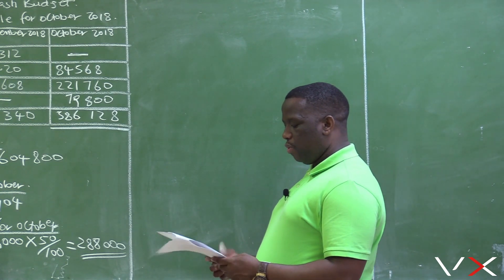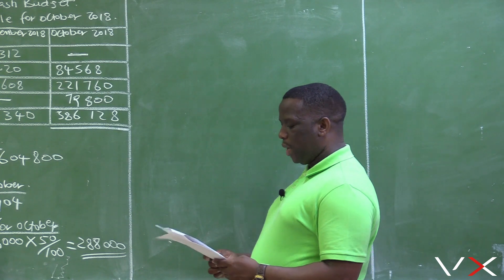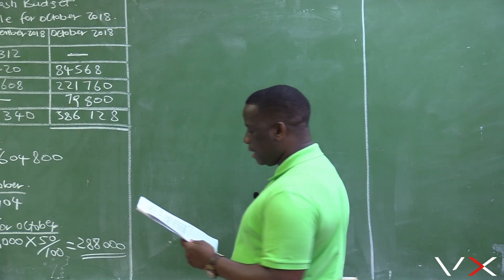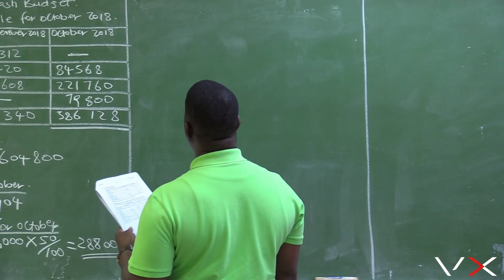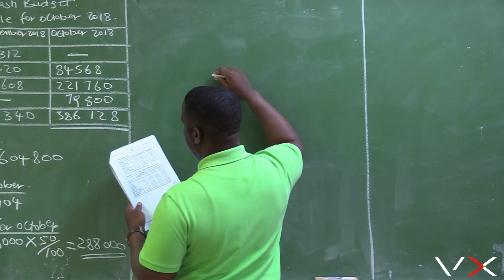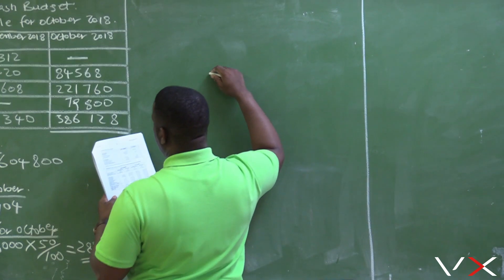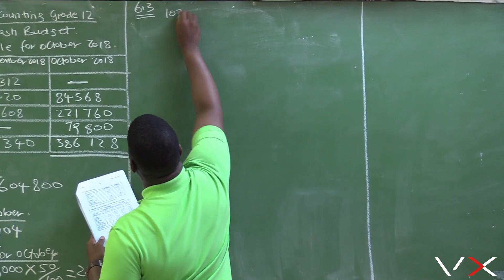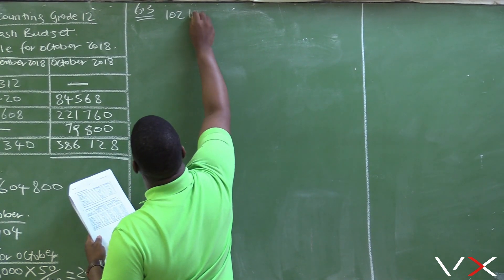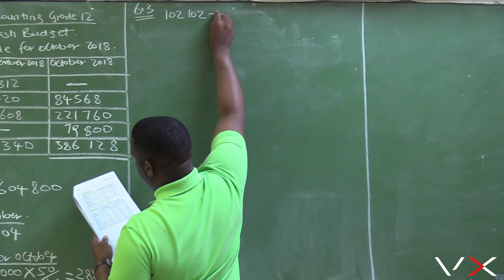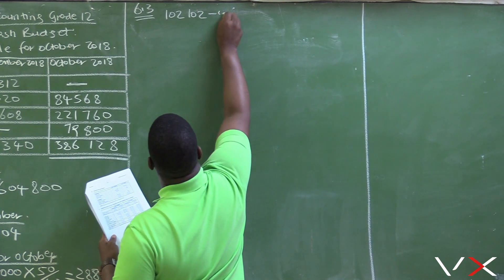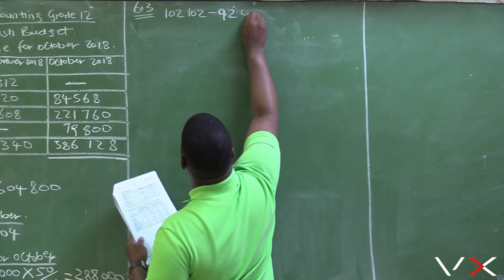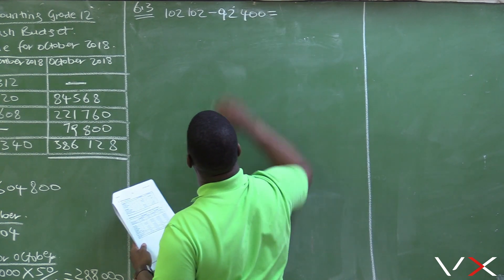If you go to page 21, the salaries for sales assistants in September is $92,400 and in October it is $102,120. So $102,120 minus $92,400 — we want to calculate the increase.